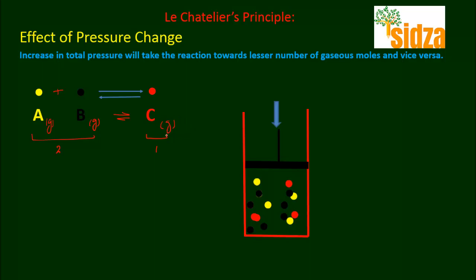What if you decrease the pressure? When you decrease the pressure, the equilibrium has to react in a way to undo the change — it will try to increase the pressure. The pressure inside can only increase when you have more gaseous moles. So decreasing the pressure will shift the equilibrium in a direction where you have more gaseous moles — that means the equilibrium will shift in the backward direction, and more of compound C will decompose back into A and B.